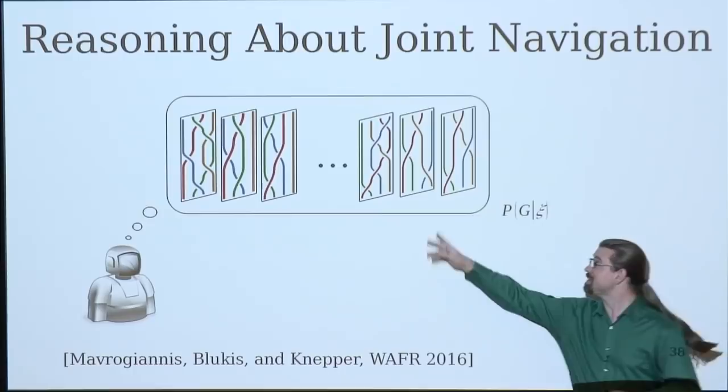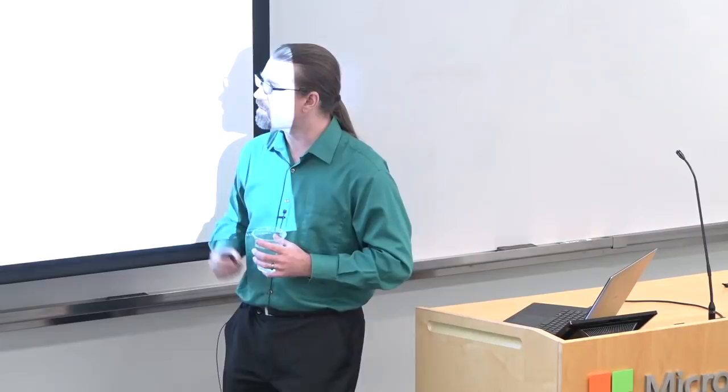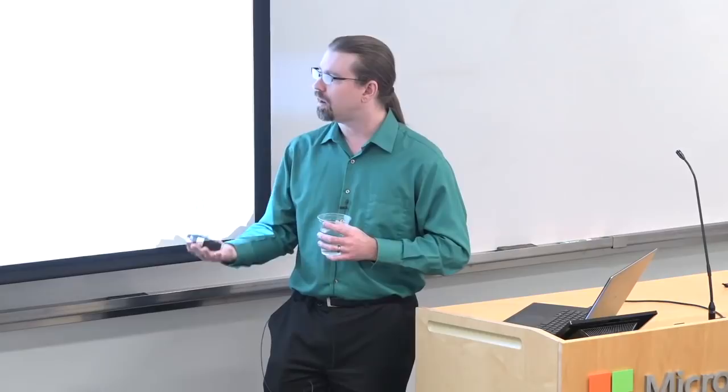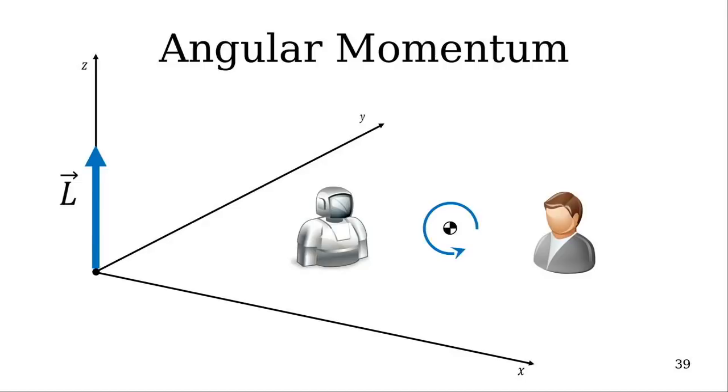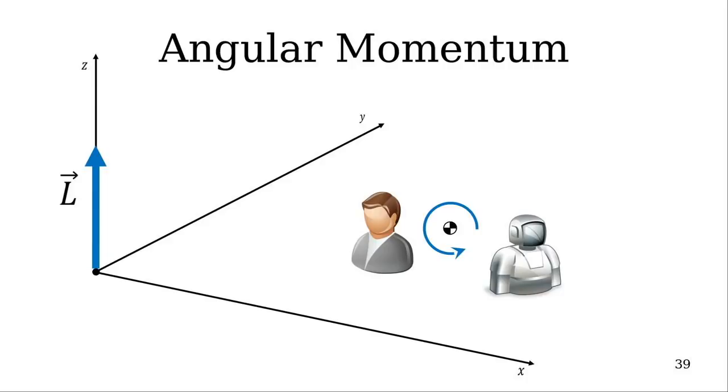So how do we think about this influence problem? If I have a particular outcome that I want, I need to legibly convey to you what outcome I have in mind. That's the consensus building. So the way that we think of this is in terms of angular momentum. So if two agents move counterclockwise around each other, we'd say by the right hand rule that they have a positive angular momentum with respect to the center of mass. Likewise, if they move clockwise around each other, we'd say that they have a negative angular momentum, right?